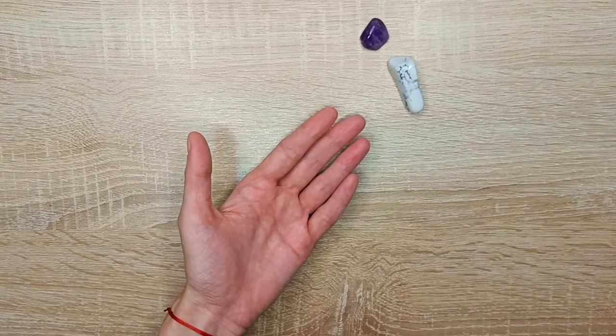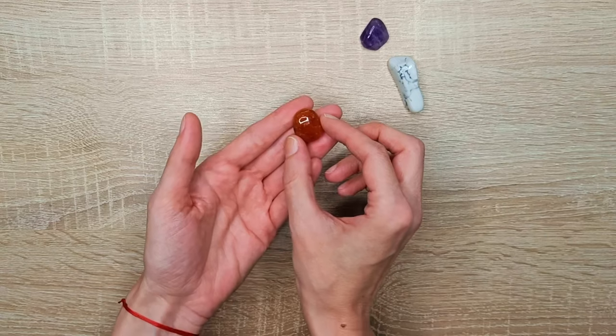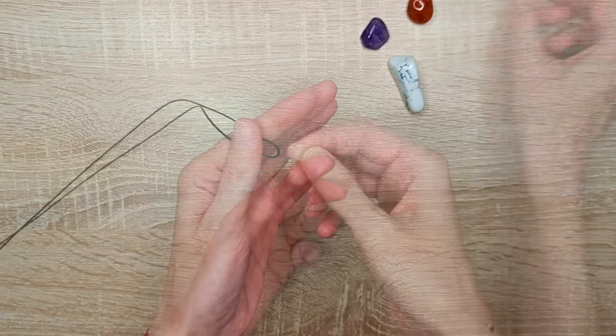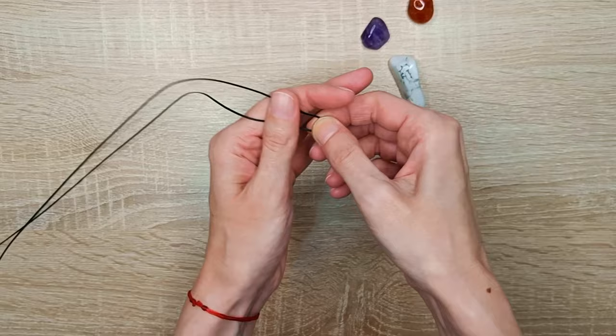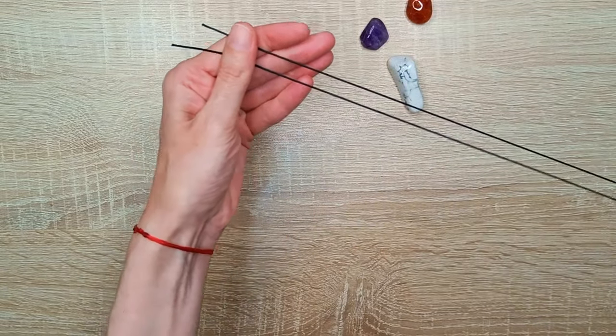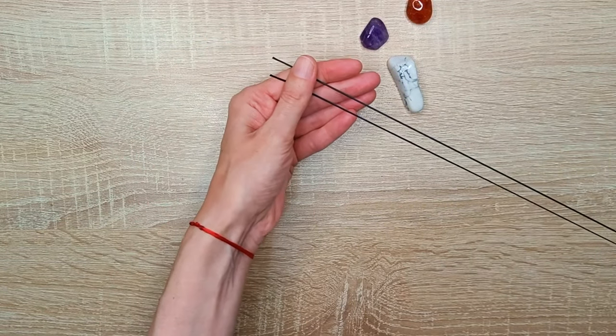You can wrap as few or as many crystals as you like and make a rear view mirror charm or a wall hanging. Stay until the end where I will show you the two wall hangings I have in my house.